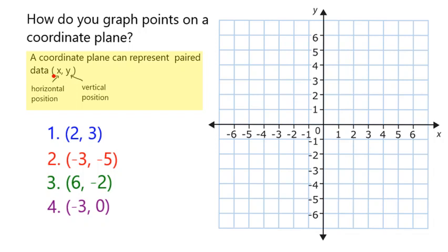The coordinate plane allows us to graph paired data. The first element of an ordered pair represents its x value, its horizontal position, whereas the y value represents its vertical position, how far up and down it is on the plane.